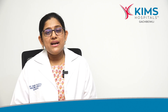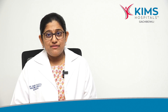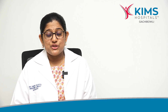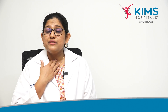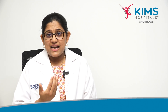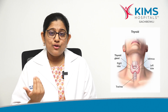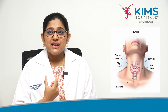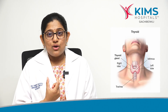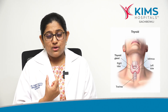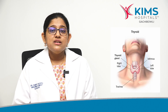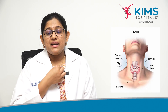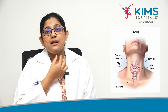The thyroid gland is a butterfly-shaped gland situated in the front of the neck. It has a right lobe, a left lobe, and a bridging part called the isthmus or a bridge. In some individuals there can also be an extra pyramidal lobe.